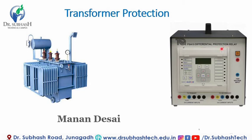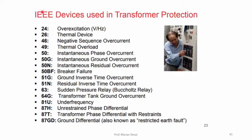The first and foremost electrical protection is differential protection, as seen in this figure showing the differential protection relay. The IEEE device used in transformer protection includes over-excitation, thermal device, negative sequence current, thermal overload, instantaneous phase over-current relay, ground over-current relay, and residual over-current relay — approximately 16 protection schemes employed in power transformers.